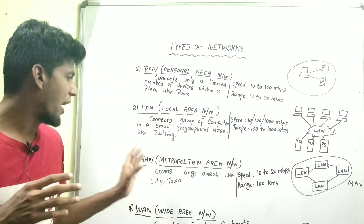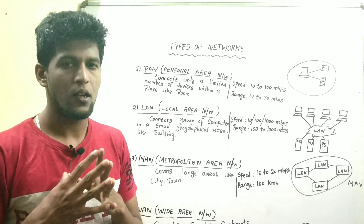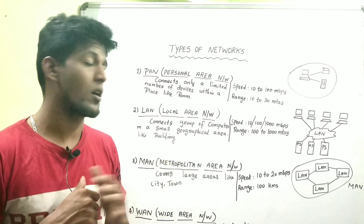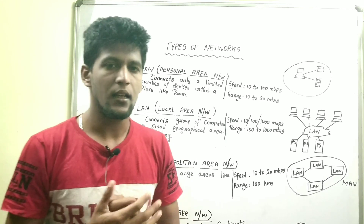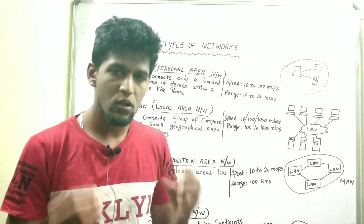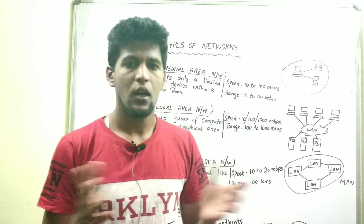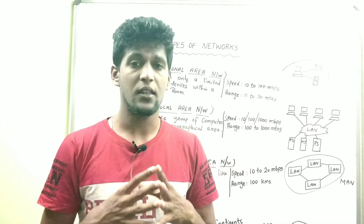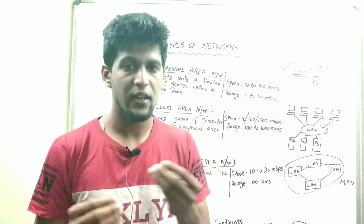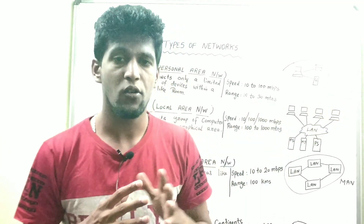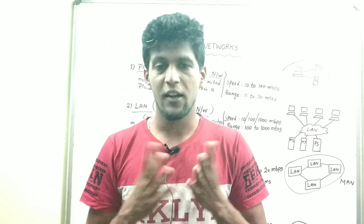The next type is MAN — Metropolitan Area Network. It covers a city or a town. There are huge areas within a city. For example, Chennai: there are IT companies in different parts of the city — you can see companies in Thiruvanmiyur and other companies in Vadapalani.